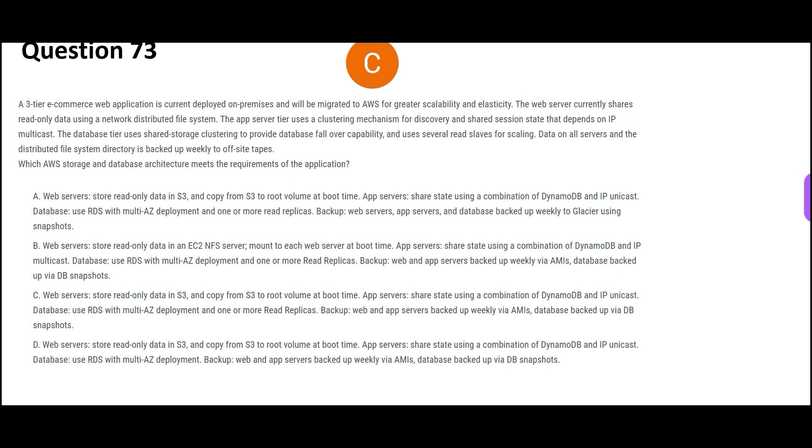Let us look at these questions now. This question is straightforward - there are three tiers. It's a three-tier application: first is the web tier which is on web server, then we have app server tier, and then database tier. For these three tiers, we have to suggest storage and database architecture. Now let us look at database requirements - it should have so many read slaves for scaling.